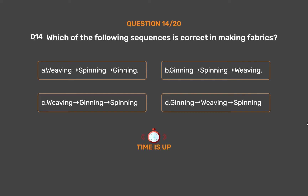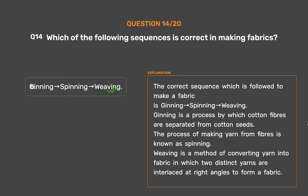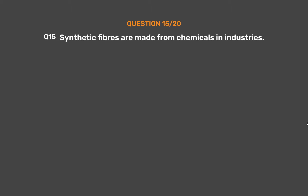The correct answer is Option B, Ginning, Spinning, Weaving. The correct sequence to make fabric is ginning, spinning, weaving. Ginning separates cotton fibers from cotton seeds. Spinning is the process of making yarn from fibers. Weaving converts yarn into fabric by interlacing two distinct yarns at right angles.